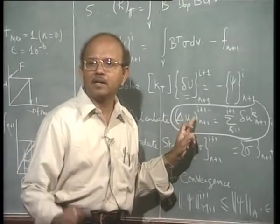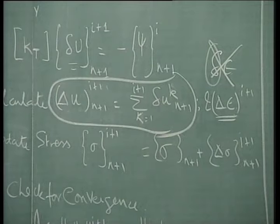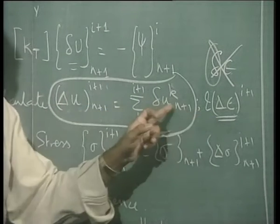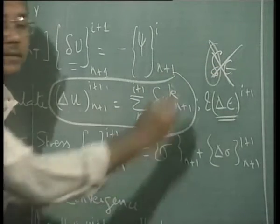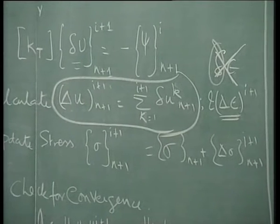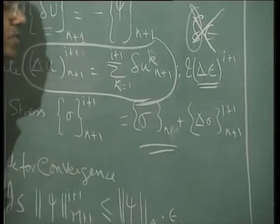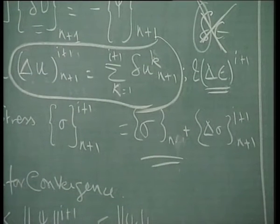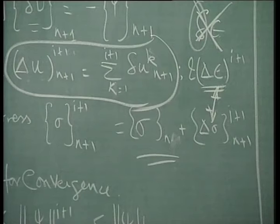From delta u_{i+1} I calculate delta epsilon — B times delta u, kept adding. I am interested in delta epsilon, not del epsilon. The next step is to update the stress. The stress is updated from the converged stress at n plus delta sigma, where delta sigma is derived from delta epsilon.